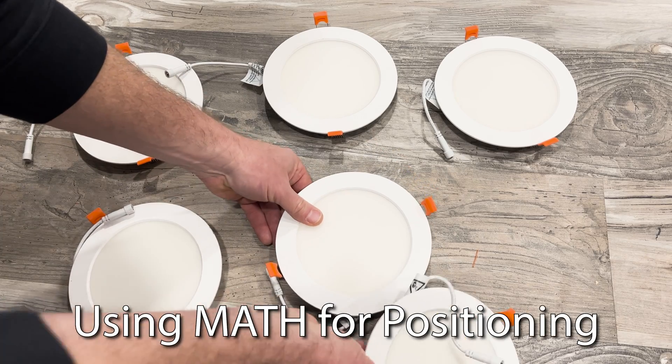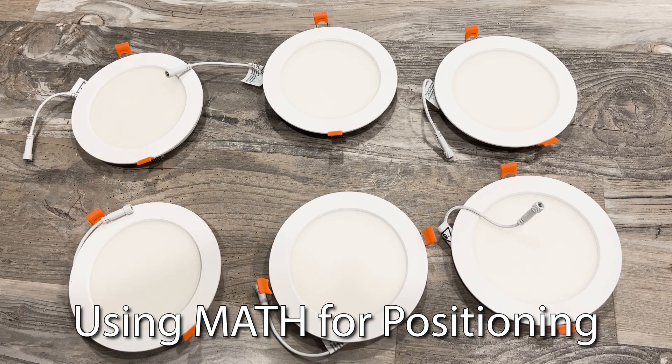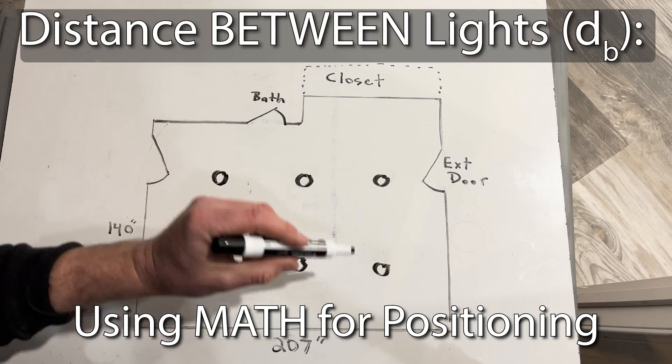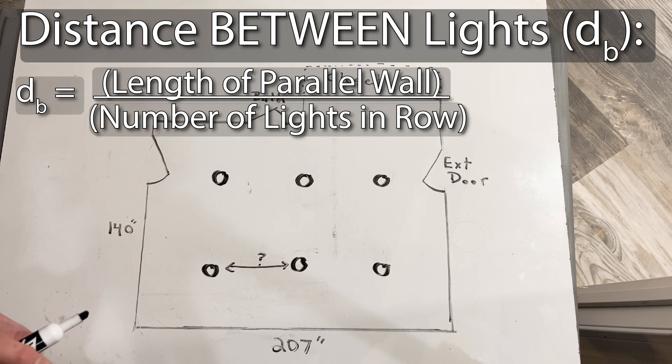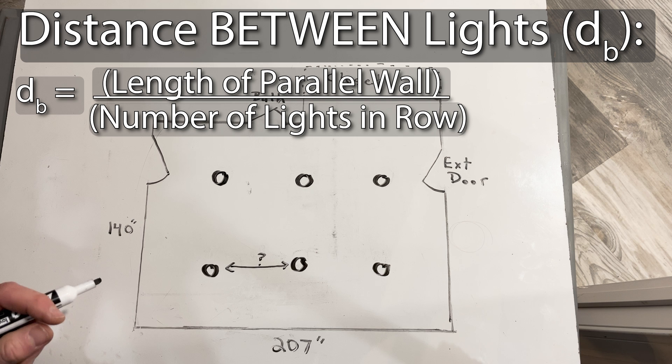To determine spacing between lights, you'll need to do a little math, but it's not too complex. For any row of lights, you can find the distance between each light in the row by taking the length of the wall they run parallel to and dividing by the number of lights in the row.